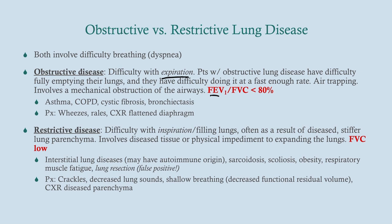With obstructive disease we often see difficulty emptying the lungs at a fast enough rate, reflected on spirometry as a low FEV1. It often involves mechanical obstruction of the airways, so we expect a low FEV1 but a roughly normal or possibly increased FVC. Examples include asthma, COPD, cystic fibrosis, and bronchiectasis — cystic fibrosis being a common cause of bronchiectasis. On physical exam we'd tend to see lower respiratory tract symptoms such as wheezing and rales, and chest x-ray would show a flattened diaphragm particularly with COPD.